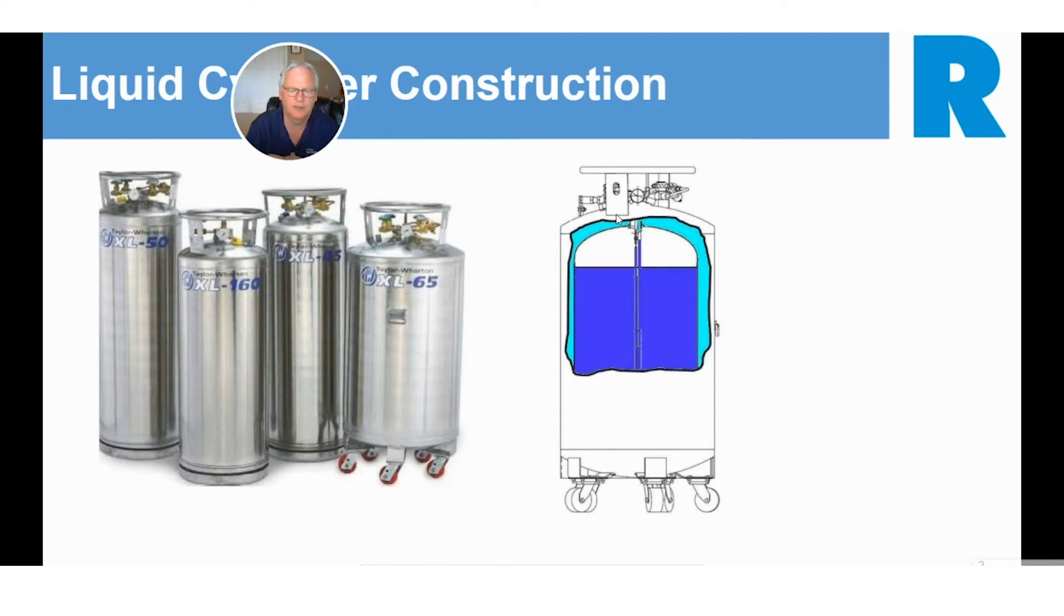These liquid cylinders, portable liquid cylinders, DOT 4L design - you can see on the schematic here on the right, they've got an inner vessel that's got the cryogenic liquid in them, stainless steel shell on the outside that you touch and make contact with. And in between there is super insulation, but there's also an extremely strong vacuum.